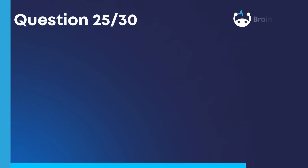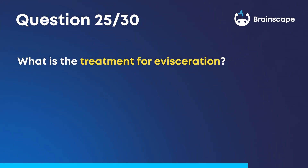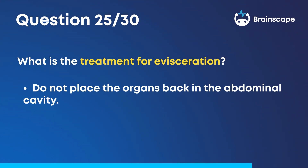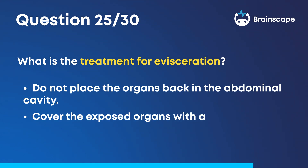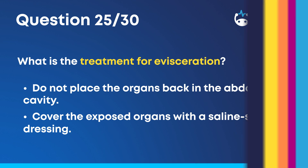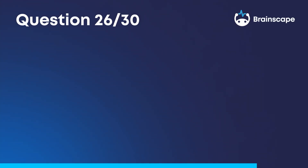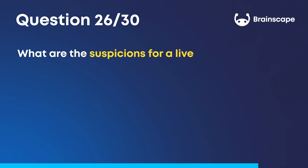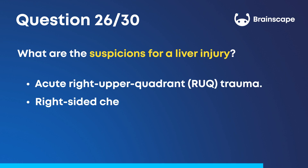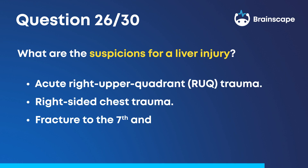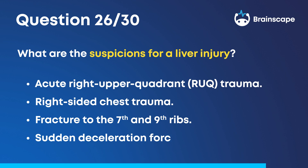Question 25. What is the treatment for evisceration? Do not place the organs back in the abdominal cavity. Instead, cover the exposed organs with a saline-soaked dressing. Question 26. What are the suspicions for a liver injury? Acute right upper quadrant trauma, right-sided chest trauma, fracture to the 7th and 9th ribs, and sudden deceleration forces.